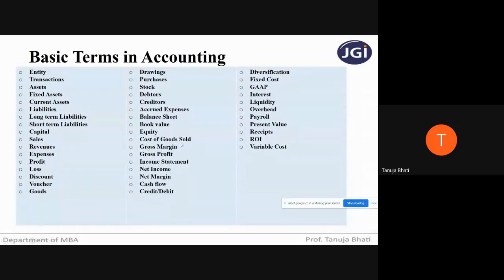Next, cost of goods sold. Cost of goods sold refers to expenses that directly relate to the creation of a product or services — what is the cost relating to the goods that have been sold. It is directly related to the manufacturing of a product or services.